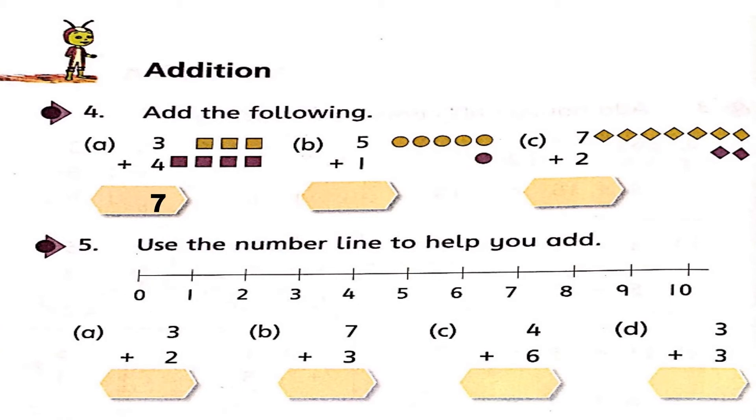In part B, there are 5 circles and 1 purple circle. How many total circles are there? Yes, 6. 5 and 1 make 6. 7 plus 2: 7 diamond shapes in yellow color and 2 in purple color. 7 and 2 make 9. Very good.